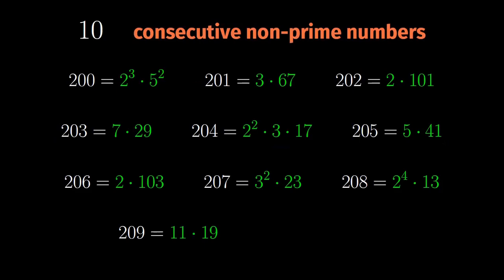Like before, this list can be extended to 11 consecutive non-prime numbers. And that's because 210 is even and then definitely not prime. But we can't extend it any further because both 199 and 211 are prime.